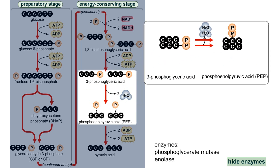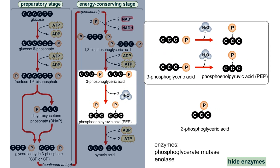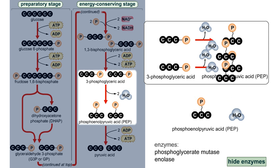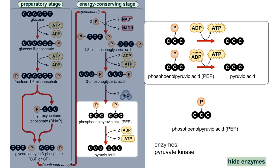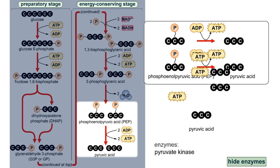In step 8, the remaining phosphate groups are moved to the middle of each molecule, forming 2-phosphoglyceric acid. Each 2-phosphoglyceric acid molecule then loses a water molecule, forming phosphoenolpyruvic acid, or PEP. In the final step of glycolysis, each phosphoenolpyruvic acid molecule donates its phosphate group to an ADP molecule, forming an ATP molecule. These final two ATP molecules bring the net yield for glycolysis to two ATP molecules and two NADH molecules.